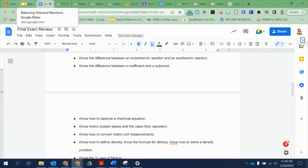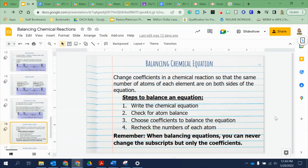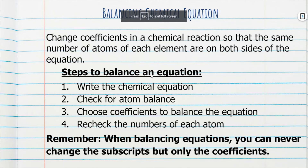Know how to balance a chemical equation. Make sure you go through the practice problems in the videos to review. The first thing is you can only change the coefficients. Write down the problem — for the final, it'll be written for you — then check for atom balance. Write all the atoms on the left side and in the same order on the right side, and make sure you have the same amount on both sides. If you don't, those are the ones you'll need to change the coefficients for. Third, choose coefficients to balance the equation. Then always recheck: put the coefficients in and confirm you have the same number of atoms on both sides. Remember — when balancing equations, you can never change the subscripts, only the coefficients.